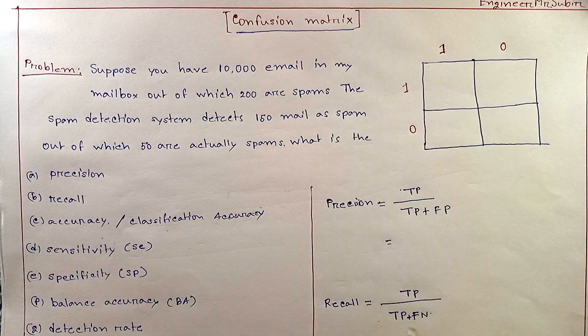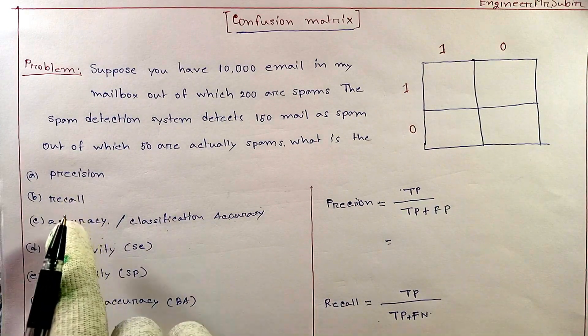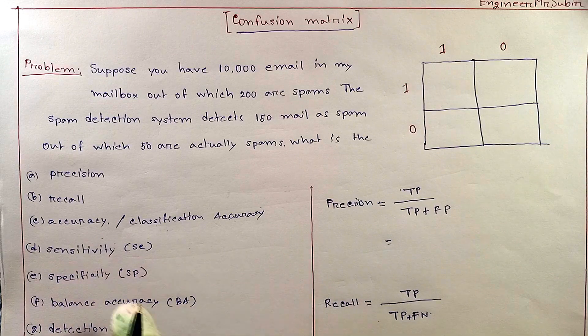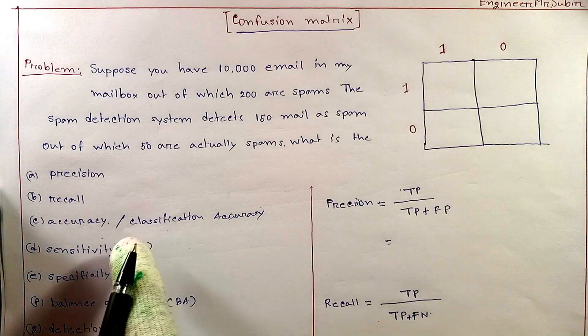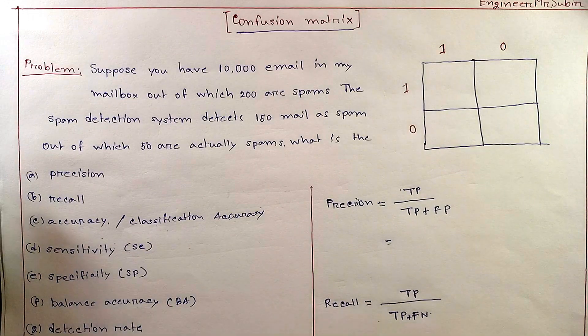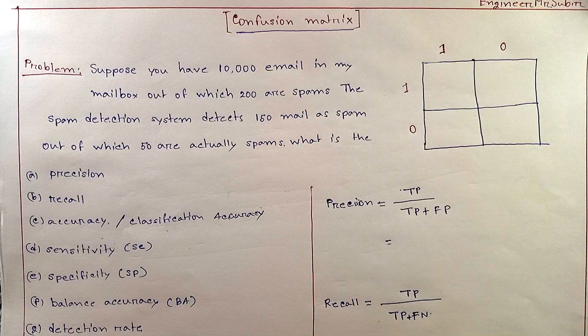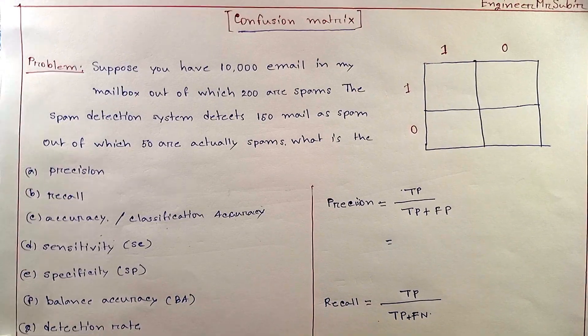In some cases only precision and recall will come, and in some cases sensitivity, specificity, balanced accuracy, F1 score, and F-beta score will also come.